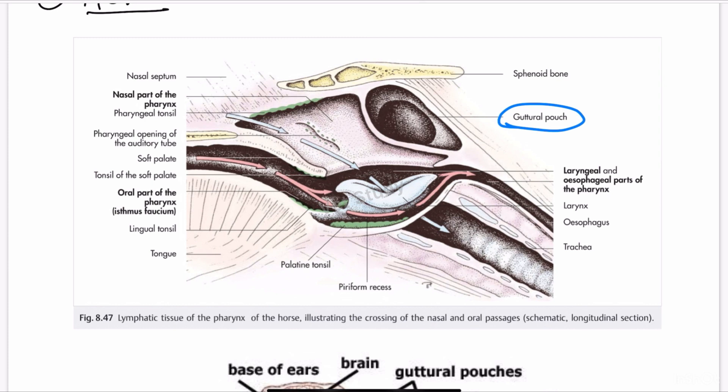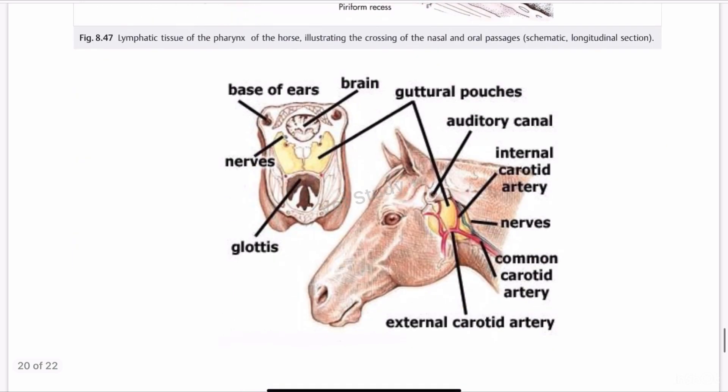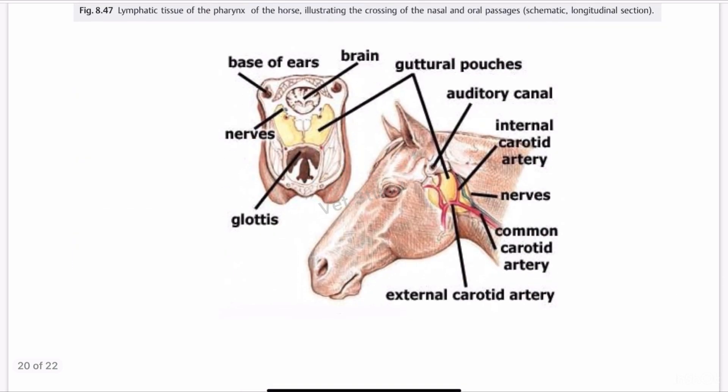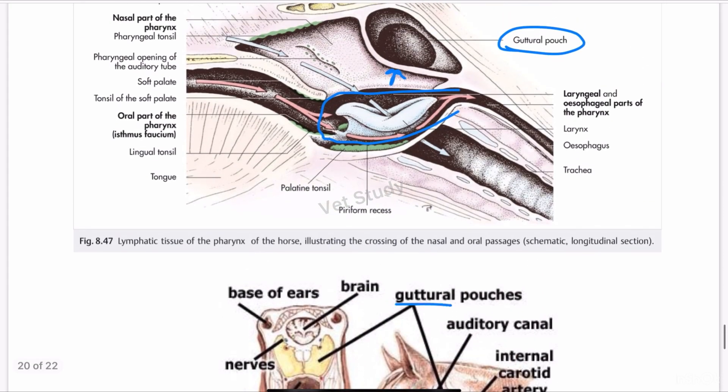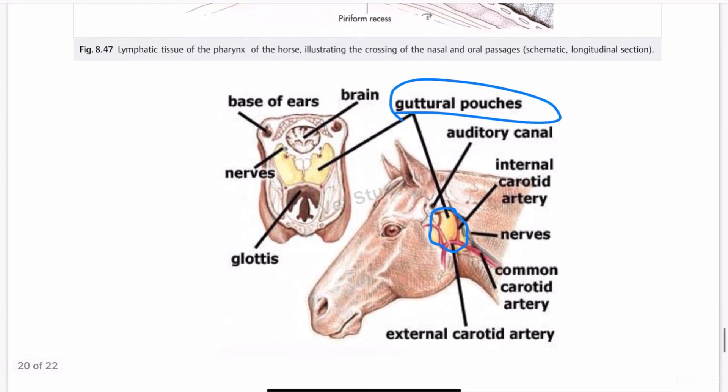They are situated on either side of the midline above the pharynx. As you can see in this area, these are present above the pharynx. You can appreciate the guttural pouch in this image - this yellow area above the pharynx. They are found only in equines. Remember that guttural pouches are only present in equines, not in other species. The epithelium is lined with ciliated epithelium.